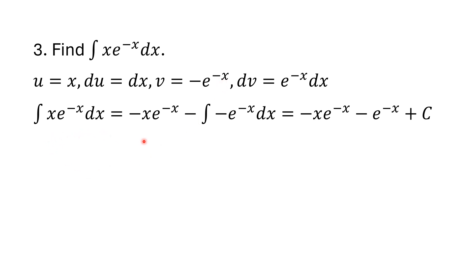So I get negative x·e^(-x), minus the integral of negative e^(-x) dx. Integrating e^(-x), I bring down the negative and get negative e^(-x). So combining signs, I get negative x·e^(-x) minus e^(-x) plus C. I need to keep track of the signs carefully here.